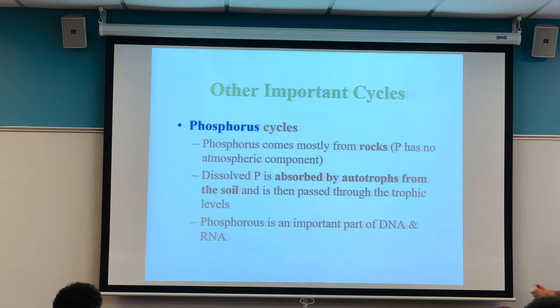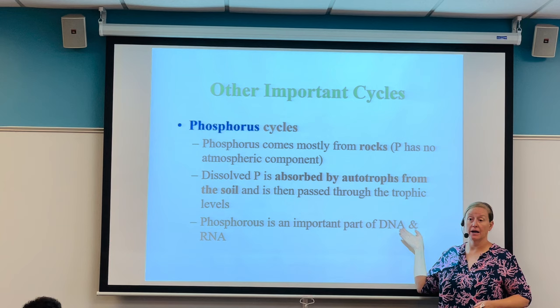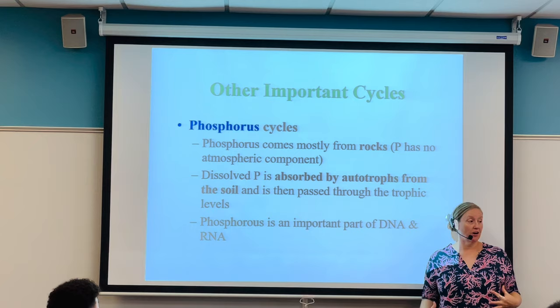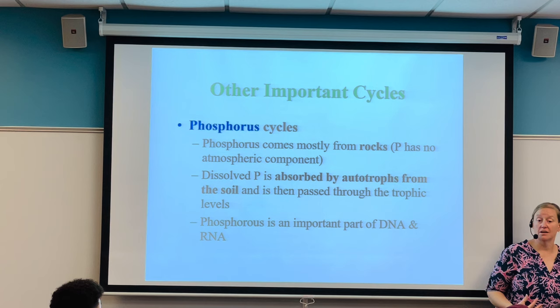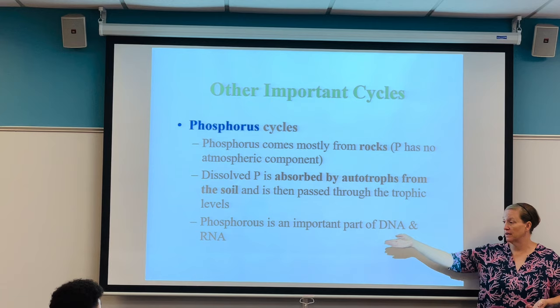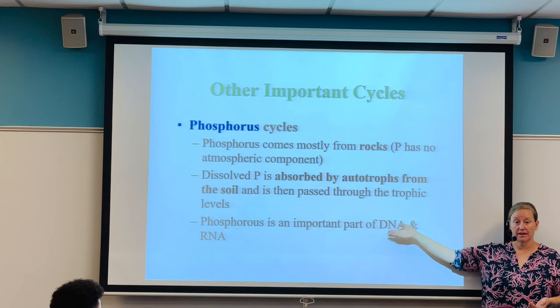Phosphorus is an important component of DNA and RNA — how we are organized and constructed. Our DNA and RNA determine how we look, our internal physiology, and our behaviors. So even one atom like phosphorus, if we have a lack of it, can really disrupt organisms.